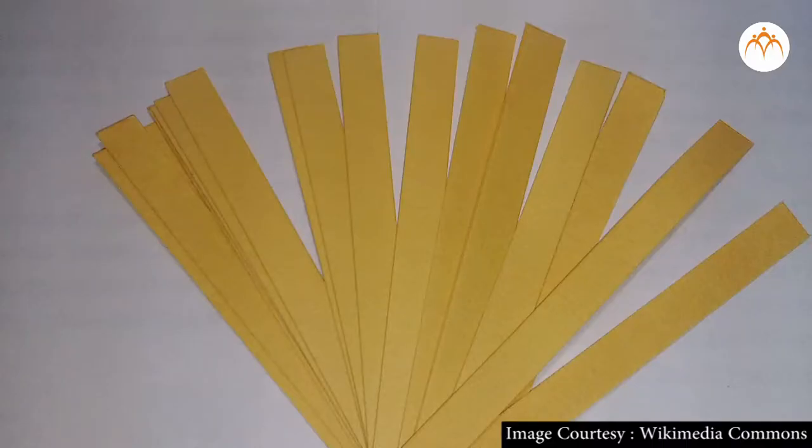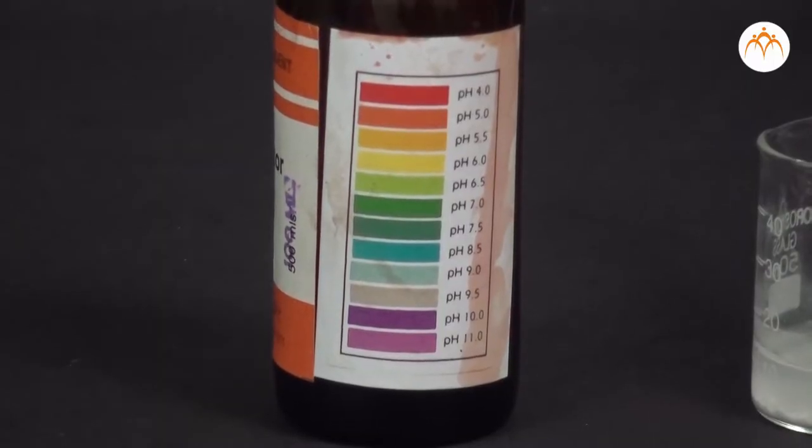By using pH paper, universal indicator, or pH meter we can measure pH of any aqueous solution. Color change helps us to measure pH of a solution.